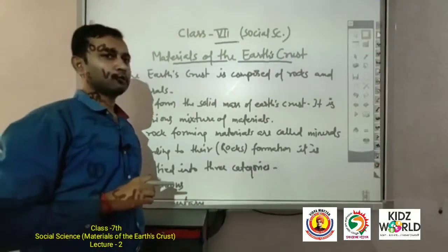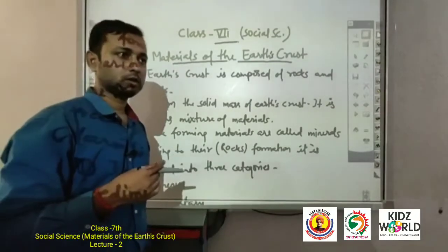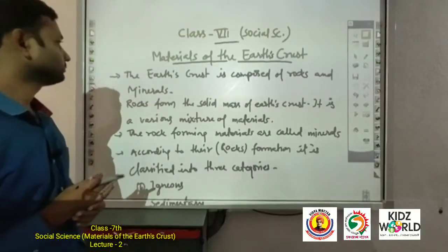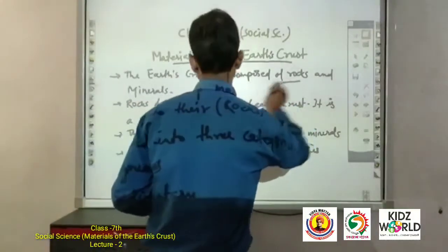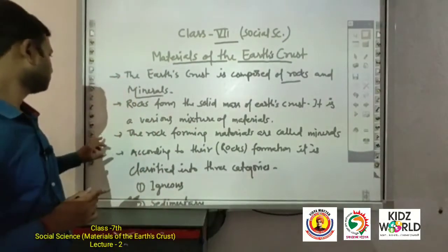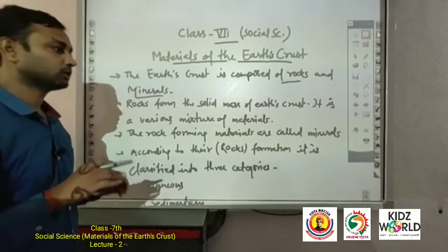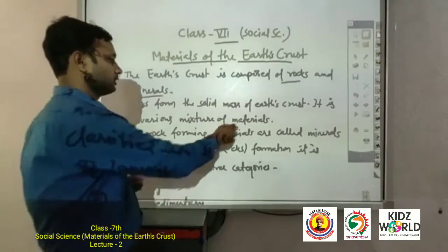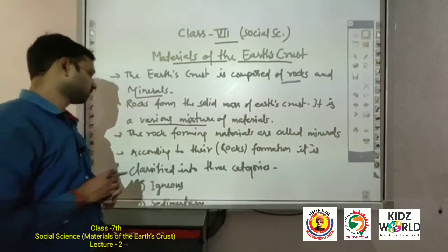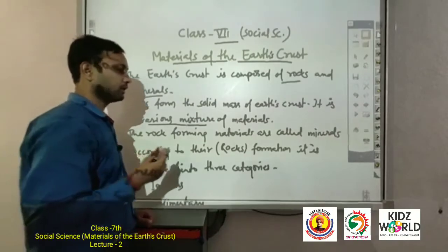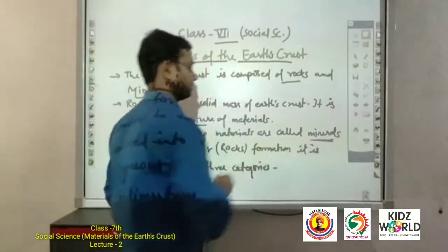Materials of the earth's crust. The earth's crust is composed of rocks and minerals. Rocks and minerals are made from the earth's crust. Rocks form the solid mass of earth's crust. It is a various mixture of materials. The rock-forming materials are called minerals.